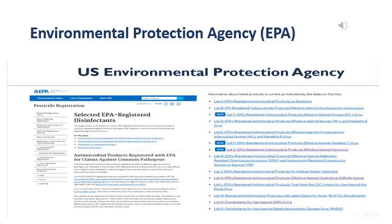In healthcare facilities, we use only EPA-approved — Environmental Protection Agency — chemical disinfectants. If further information about registered chemical disinfectants is needed, it can be found through the EPA website. The EPA is responsible for protecting people and the environment from significant health risks and for developing and enforcing environmental regulations. If we want to find the type of disinfectant for a specific microorganism such as Candida auris, we can go directly to the EPA and find a list of registered disinfectants safe for use in healthcare facilities.